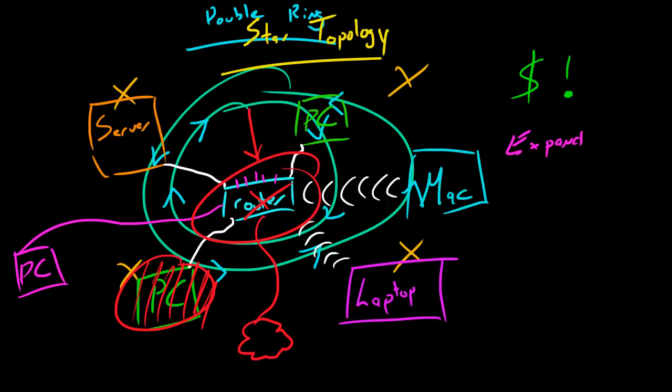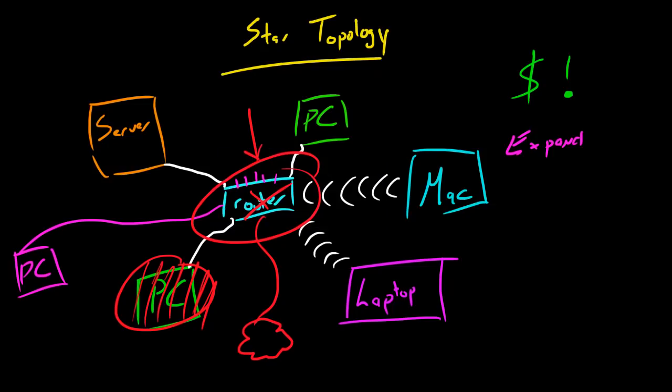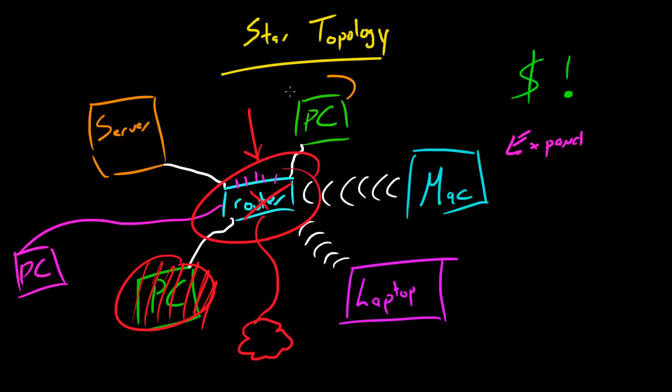Another thing is that when I talk about NIC cards, typically if you look at this star example, this PC right here would only have to have a NIC card with one port in it because it only has one ethernet cable going to one router. So one cord would mean only one port in your ethernet card. But for here, let's go ahead and take a look at this PC. This would need a NIC card that had one, two, three, four ports.